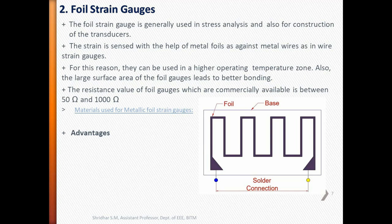In these gauges, the bonding is better due to the larger surface area of the foil. The foil gauge finds a wider field of action. The figure shows a typical foil gauge where a foil is cemented on a base and solder connections are taken out.